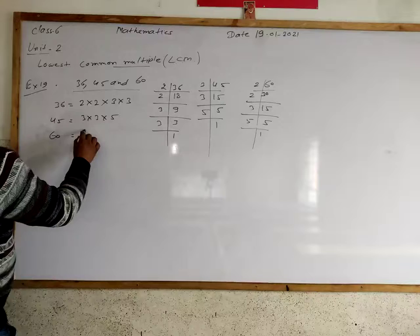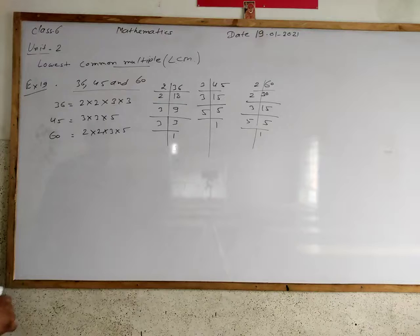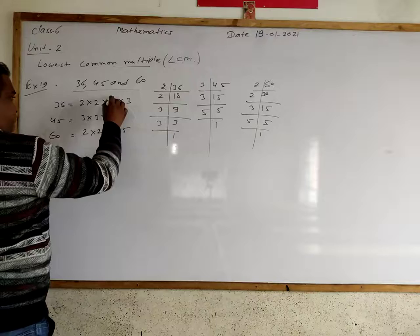So factors for 60 are 2 multiply 2 multiply 3 multiply 5. Now, common factors.